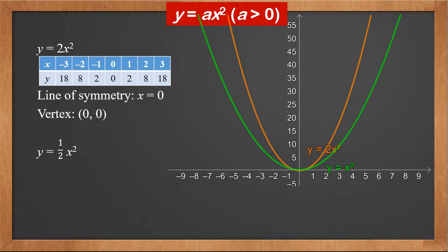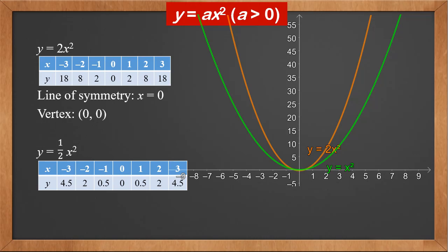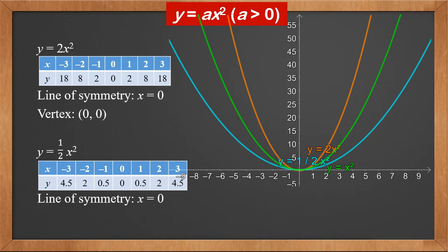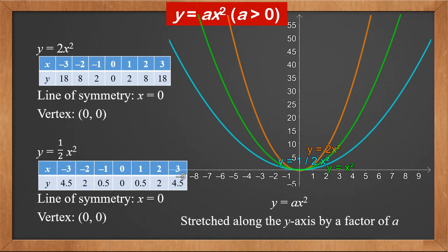Next let's look at y equals half x squared. The x values are still the same. The y values are half as much now. Therefore, for the same x value, this curve has a lower value, so the graph becomes this — compressed along the y axis and becomes wider. We say it is stretched along the y axis by a factor of half. The line of symmetry is still the y axis and the vertex is still the origin. So for y equals ax squared, the graph is stretched along the y axis by a factor of a. If a is greater than 1, it becomes thinner. If a is between 0 and 1, it becomes wider.